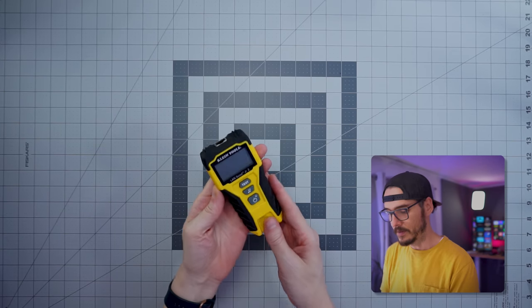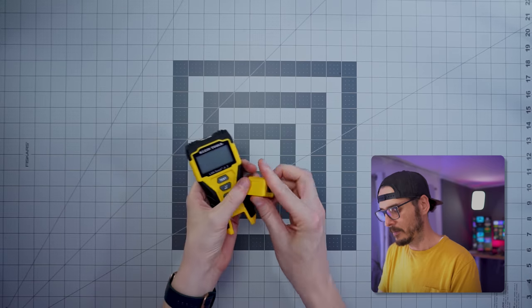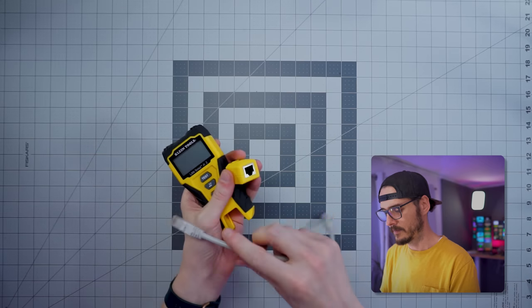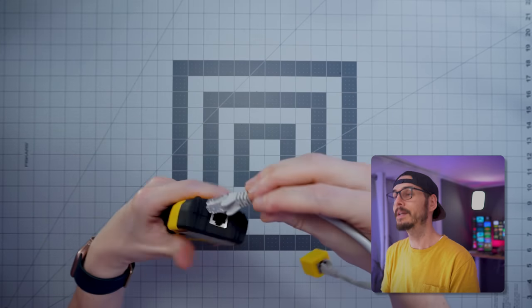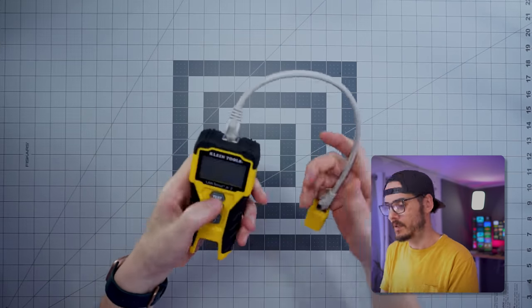So all you need to do to actually test cable is pull off this end, plug it into here, turn this on, do it again for a backlight. Once we plug it in and we test, we can see that this cable is passing. Now, if this wasn't passing, we would get some error codes here.